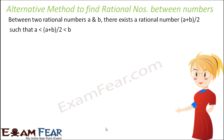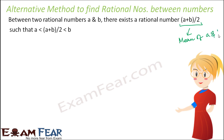There also exists an alternative method to find rational numbers between numbers. By calculating the mean of two numbers — between any two rational numbers A and B, there always exists a rational number (A plus B) divided by 2. This is nothing but the mean of A and B, which is the average of two numbers.